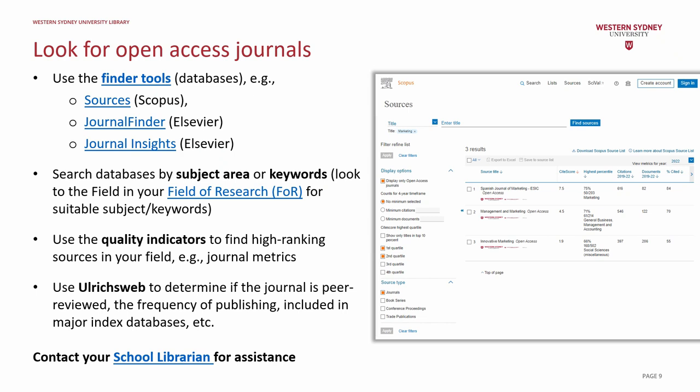Let's look at how to use Scopus Sources. If you intend to submit your work to a journal, use your field of research code to find suitable keywords for searching the title or to conduct a subject search. Down the left-hand side of your screen, filter your search results by open access, by SiteScore highest quartile, for example Q1 or Q2, and limit the search to journals. Note that the journal quartile may differ from subject to subject, so base your selection on the one most suited to your research.